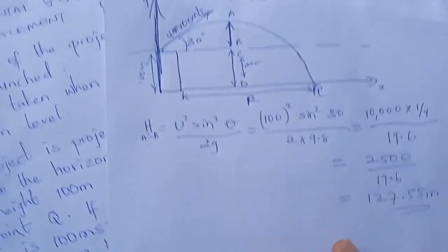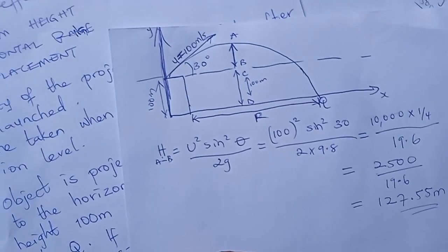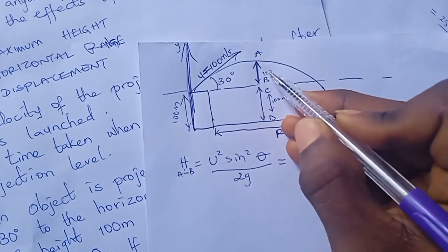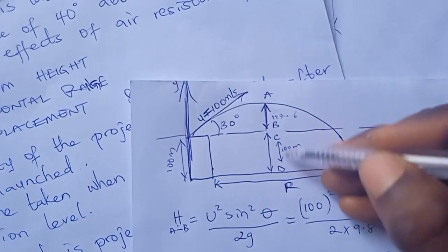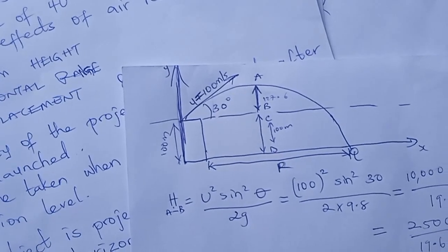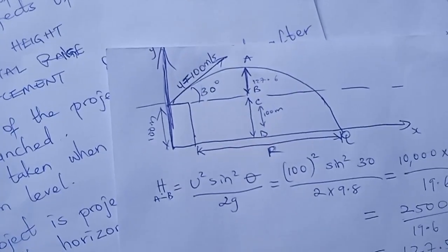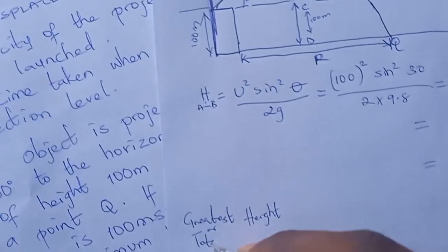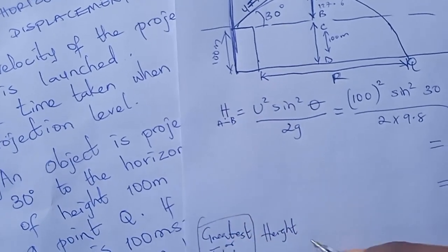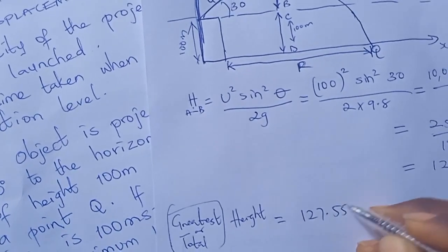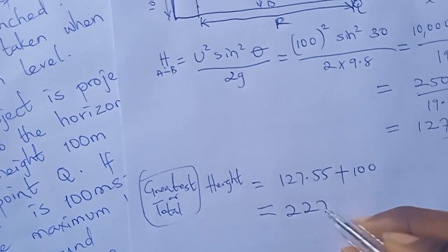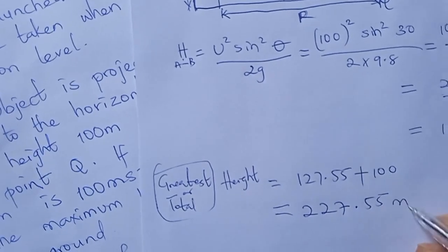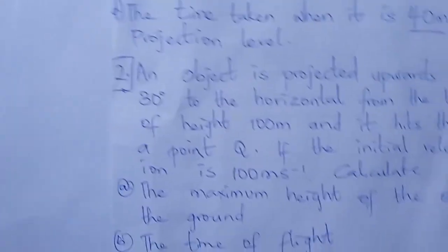So the height from the launch point up to the maximum is 127.55 meters. To get the greatest height above the ground, we add this to the tower height: 127.55 + 100 = 227.55 meters. That is the maximum height of the object above the ground.